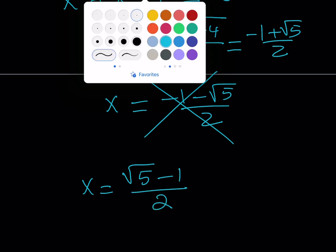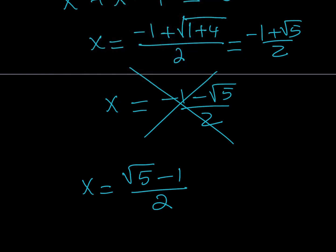Why did I call this a golden problem? Because this is not the golden ratio, but it's related to the golden ratio. If you know what the connection is, please comment down below.